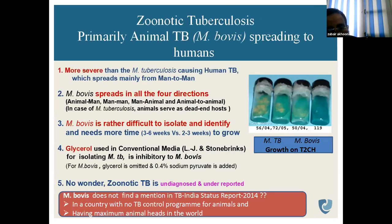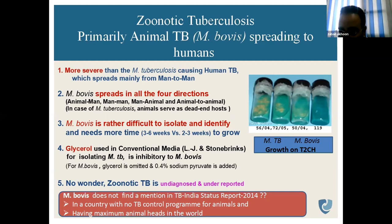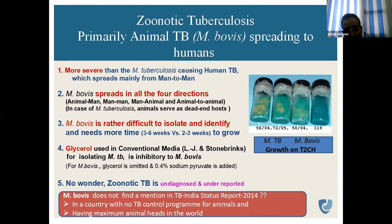Zoonotic tuberculosis is primarily caused by Mycobacterium bovis, which is the main cause of TB spreading to humans. It spreads from cattle to sheep and goat, and then to humans. It is more severe than Mycobacterium tuberculosis — the actual tuberculosis bacillus in humans. Mycobacterium bovis spreads in all four directions: animal to man, man to man, man to animal, and animal to animal. It is multidirectional, while in Mycobacterium tuberculosis, animals serve as dead-end hosts.